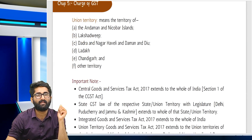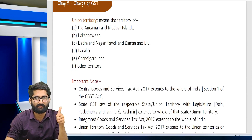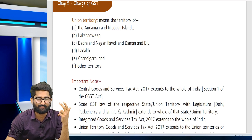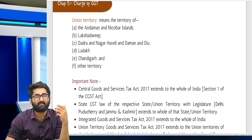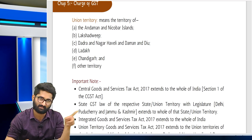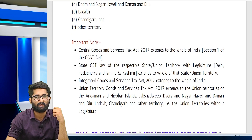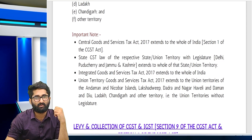Union territories include: Andaman and Nicobar Island, Lakshadweep, Daman and Diu, Dadra and Nagar Haveli, Ladakh, Chandigarh and other territories. Other territories means the territorial waters. Important note: the Central Goods and Service Tax Act extends to the whole of India.